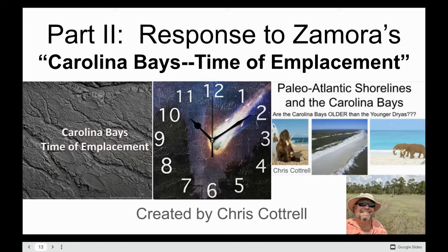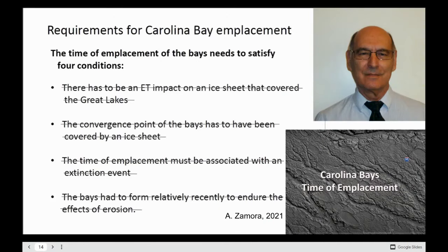This is kind of a combination video, but just to recap: in my most recent video, I systematically went through Antonio's requirement list for Carolina Bay emplacement to show that the Younger Dryas isn't the only possible formation date for the Carolina Bays and Nebraska Rainwater Basins. When you pair the marine oxygen isotope data collected from the Greenland and Antarctic ice cores with ancient east coast shorelines, we find that the bays must be much older — possibly even 60 times older than the Younger Dryas. If you haven't seen my videos on the Paleo Atlantic shorelines yet, feel free to click on the link above before continuing on.